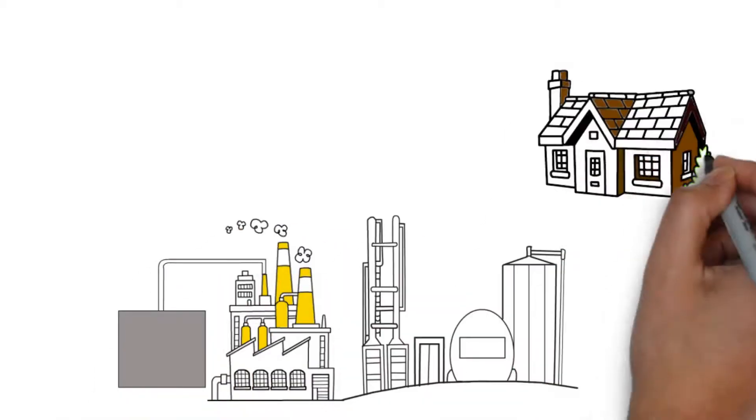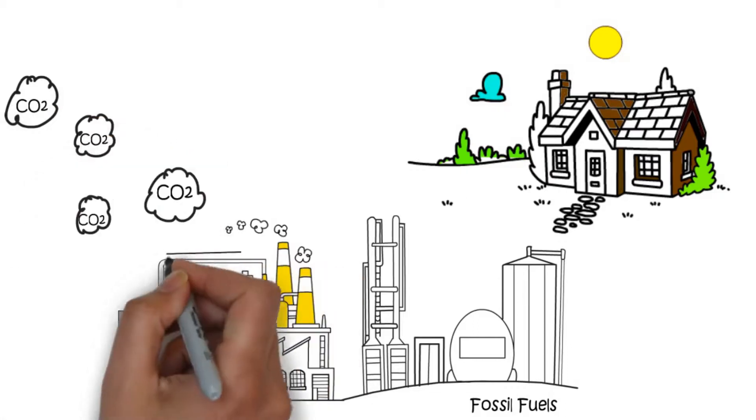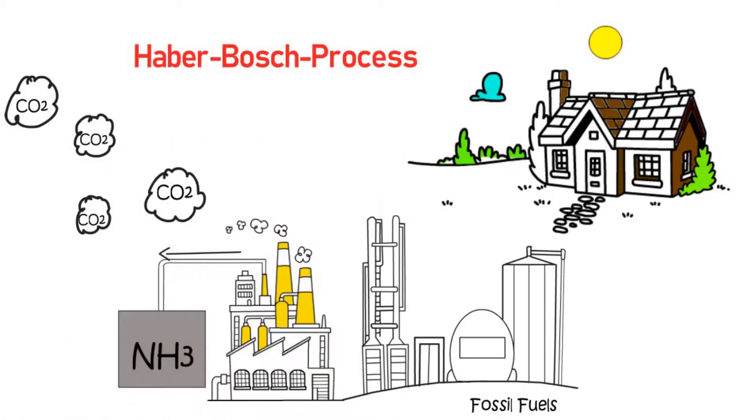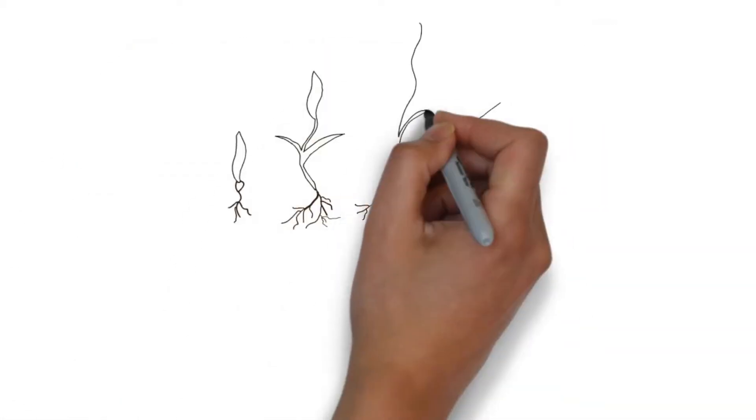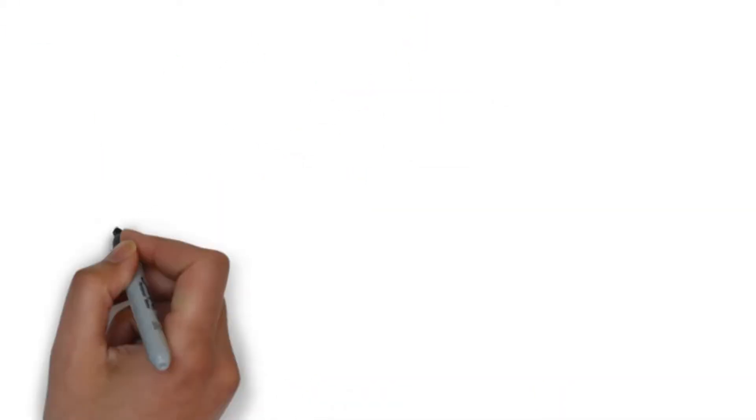2% of global CO2 emissions are produced during the conversion of fossil fuels to ammonia in the so-called Haber-Bosch process. The ammonia is converted into fertilizers, which allow us to feed our global population.